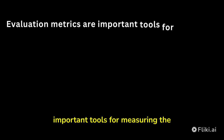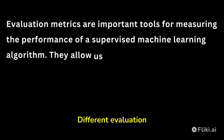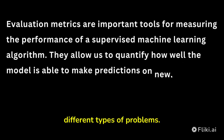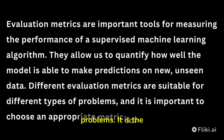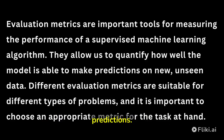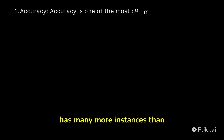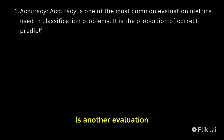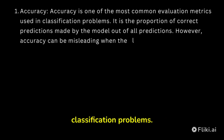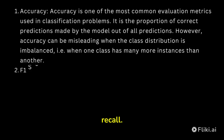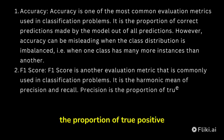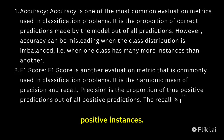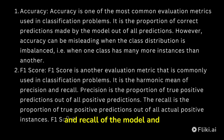Evaluation metrics are important tools for measuring the performance of a supervised machine learning algorithm, and different metrics are suitable for different types of problems. Accuracy is one of the most common evaluation metrics used in classification problems — it is the proportion of correct predictions made by the model out of all predictions. However, accuracy can be misleading when the class distribution is imbalanced. F1 score is another common evaluation metric; it is the harmonic mean of precision and recall. Precision is the proportion of true positive predictions out of all positive predictions, and recall is the proportion of true positive predictions out of all actual positive instances. F1 score considers both and provides a balance between them.